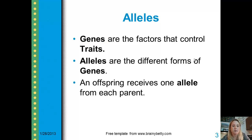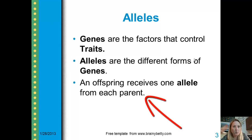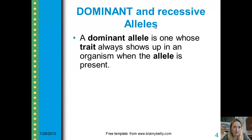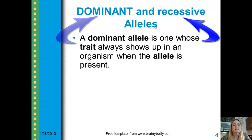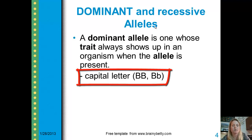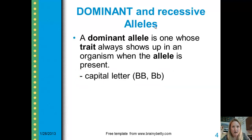Genes are made of alleles. Each gene contains two alleles — one received from your mother and one received from your father. We represent these alleles in science with letters. One really important factor you need to understand in this unit is the difference between a dominant and a recessive allele. Dominant alleles are represented with capital letters; recessive alleles are represented with lowercase letters. A dominant allele will always show up in an organism when it is present. A recessive allele can be covered or masked by a dominant allele.